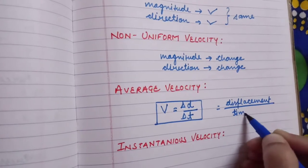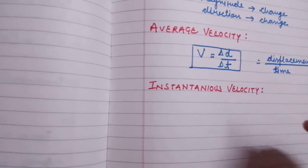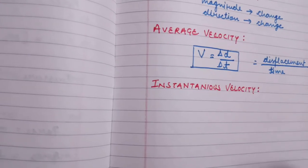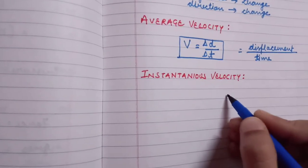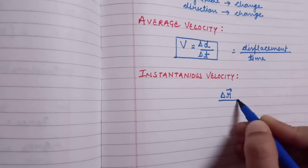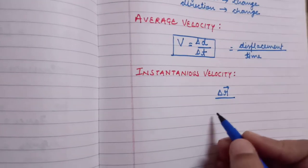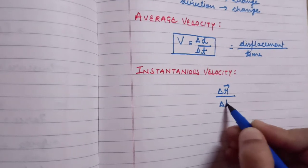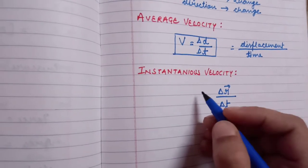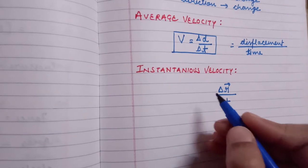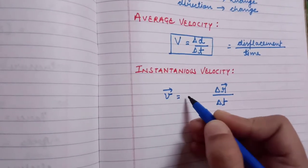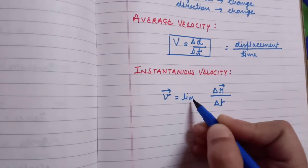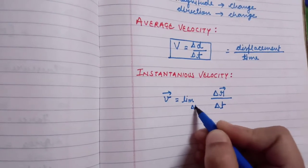Instantaneous velocity is defined as the rate of change of position vector of a particle with time at a certain instant of time. It takes limits from delta t approaching zero. That is the formula for instantaneous velocity.